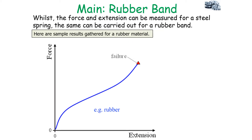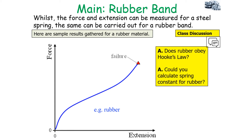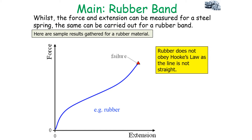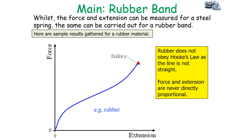Previously we've looked at the force extension graph of a steel spring, but the force and extension can also be measured for a rubber band. Here is a force extension graph of a rubber material. When you look at this information, you ask yourself: does this rubber material obey Hooke's Law? It's important to note that rubber does not obey Hooke's Law because the line of the force extension graph is not straight, meaning force and extension are never directly proportional.